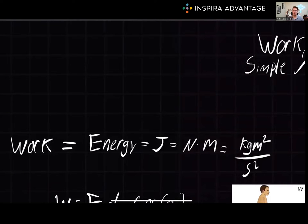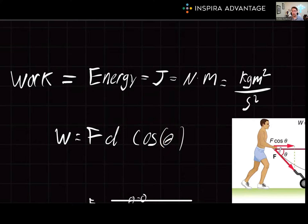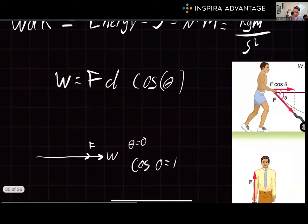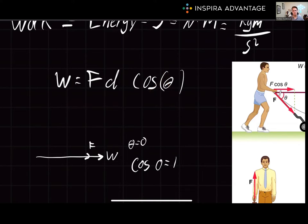The formula we use to represent work is: work equals force times distance times cosine theta, where F is the applied force, d is the distance the object moves, and theta is the angle between the force and the direction of movement. When the force is applied in the same direction of movement, the angle is zero degrees, and cosine of zero equals one. So the work equation simplifies to just work equals force times distance. This is often the case on the MCAT, but not all the time.